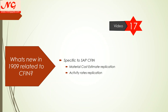In 1909, specific to Central Finance, we have a couple of things added to the replication scope: material cost estimate replication, which is very interesting, and activity rates application. I will cover these two items separately in configuration as well. From an understanding perspective, when you do material cost estimate in ECC, it is now replicable to S4.